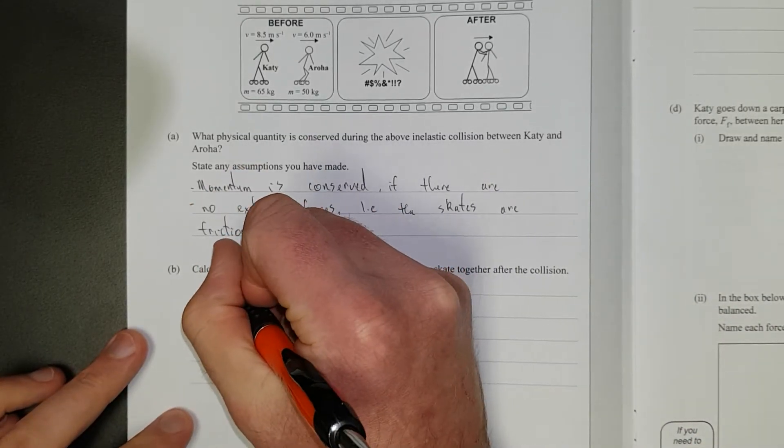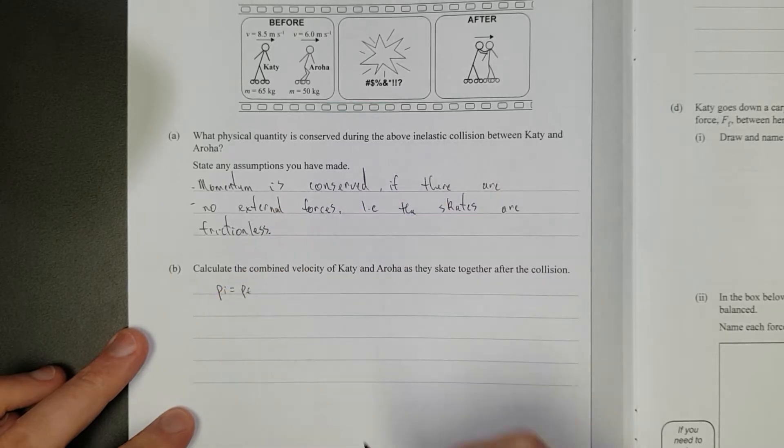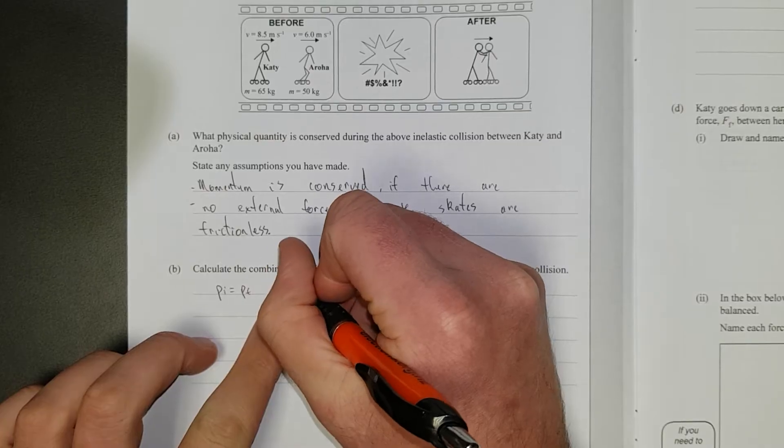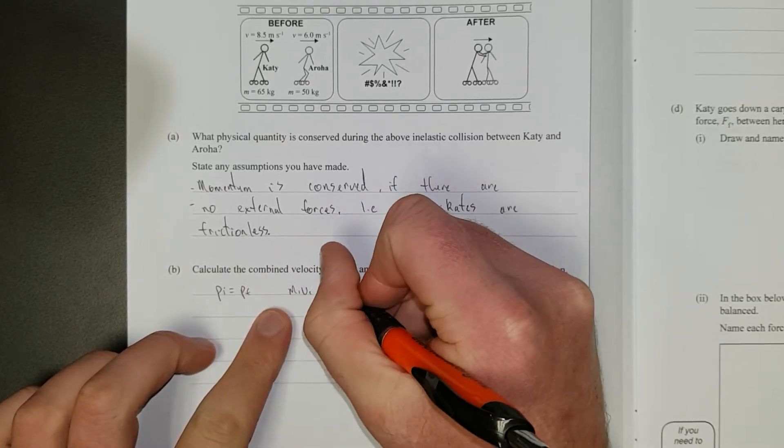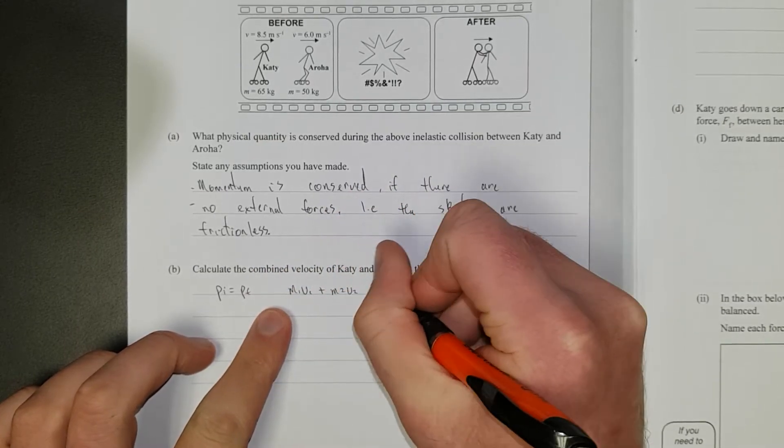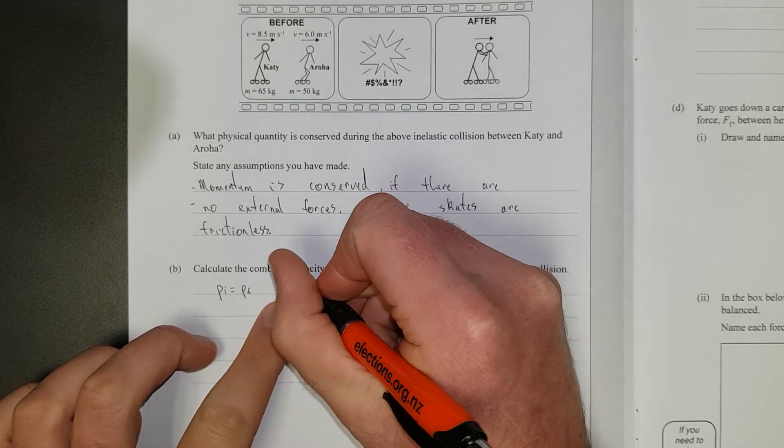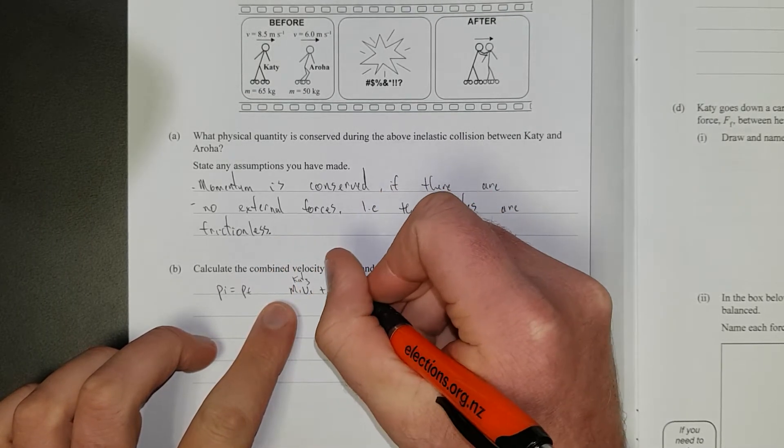So we can say the initial momentum, pi, is equal to the final momentum, pf. And then we can say, because there's two of them, I'll just go m1 v1 plus m2 v2 is equal to, so this is, let's say, this is Katie, just whatever, and this is Aroha.